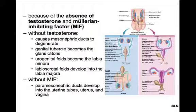Without Müllerian inhibiting factor, or Müllerian inhibiting substance — MIF or MIS, same thing — the paramesonephric ducts are going to develop into the uterine tubes, the uterus, and the vagina, as seen in the figure.